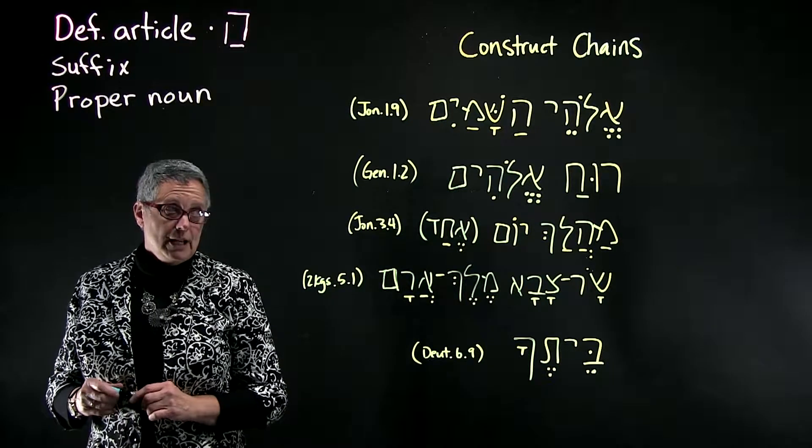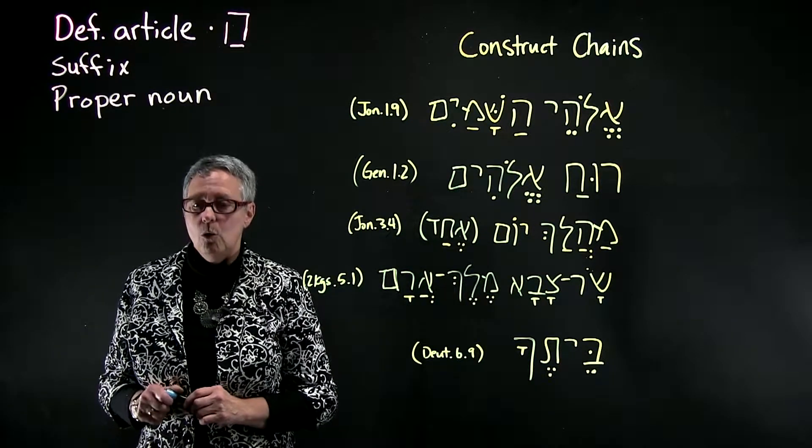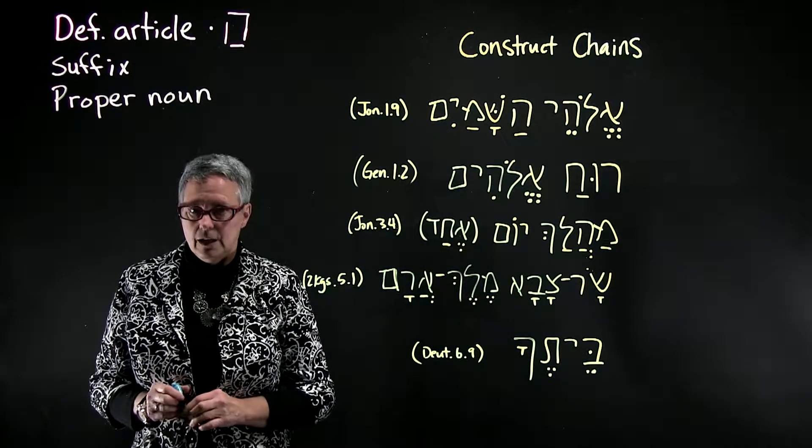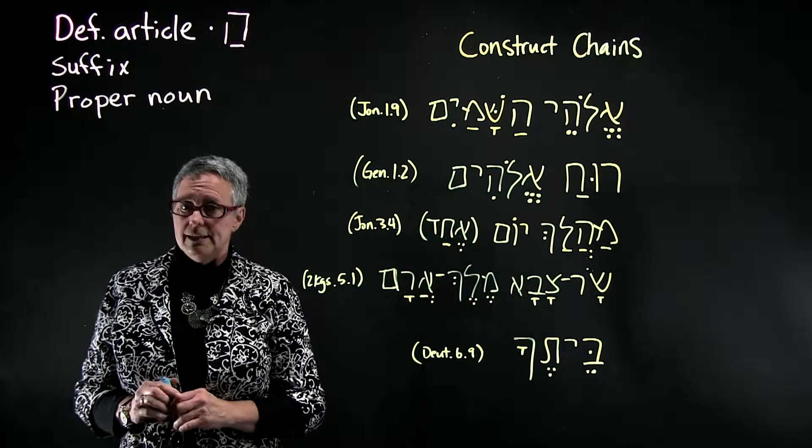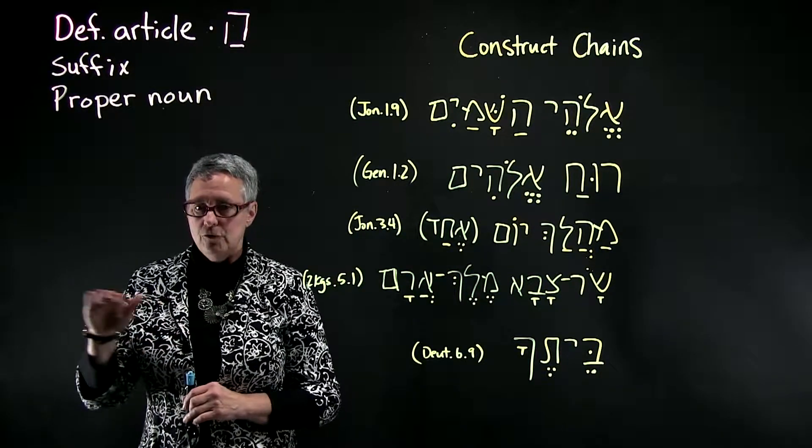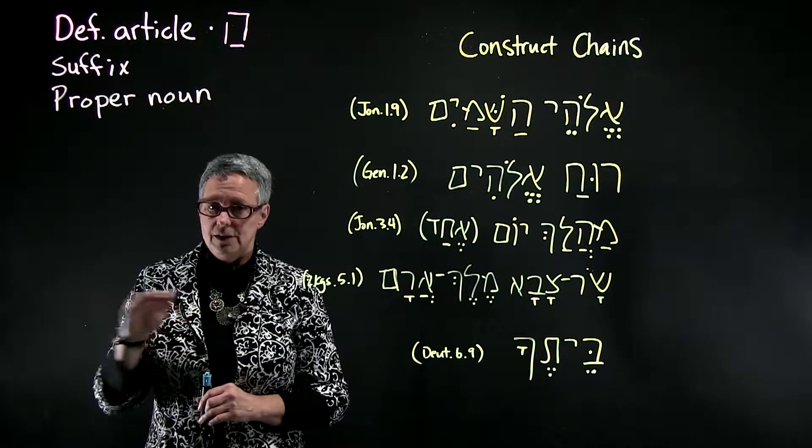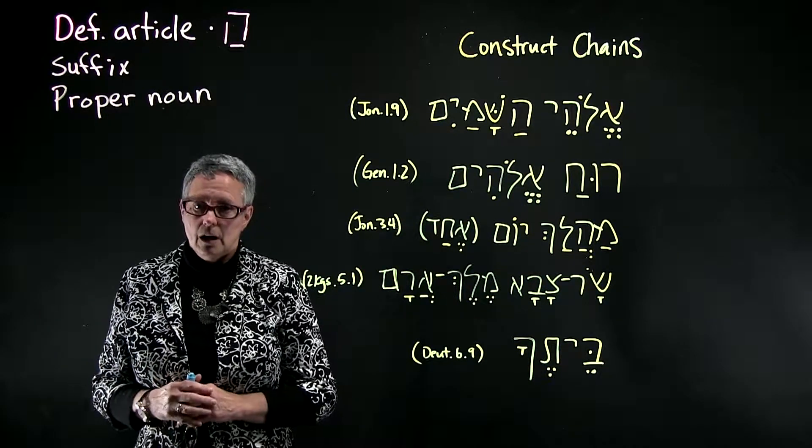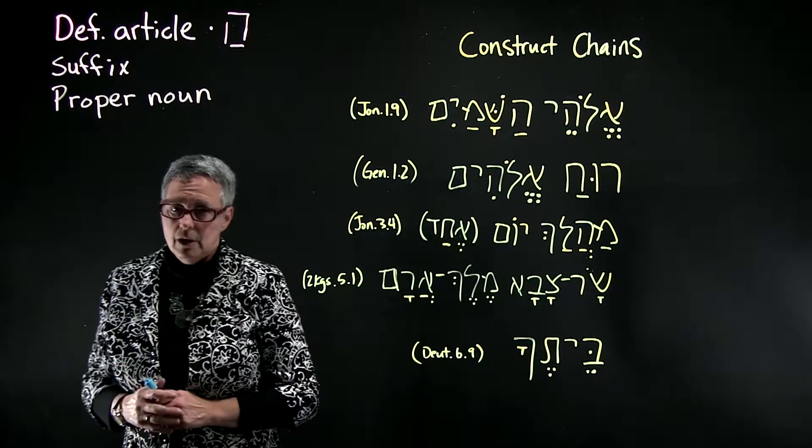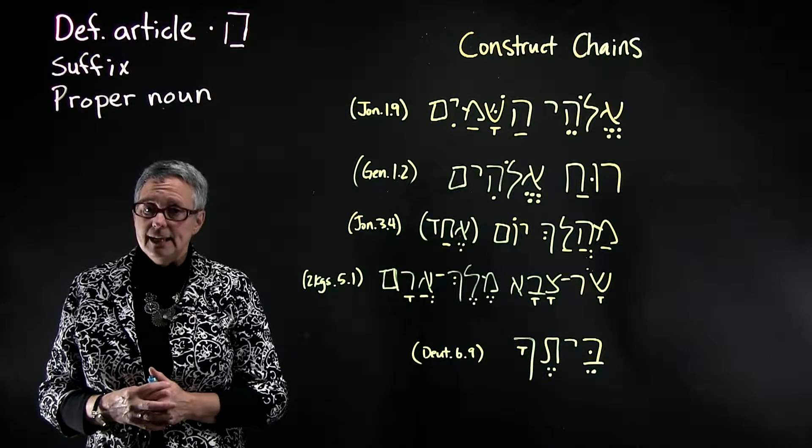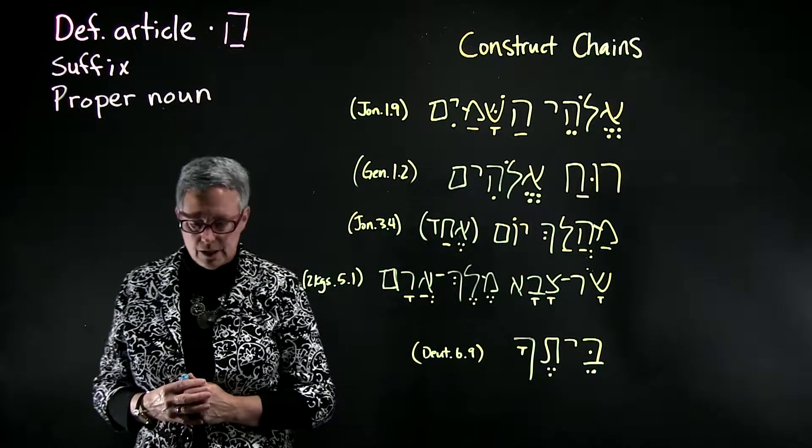A construct chain can be either definite or indefinite. If the construct chain is definite then we translate every word in the chain with the definite article or a proper noun. If the construct chain is indefinite all the words in the chain will be indefinite.